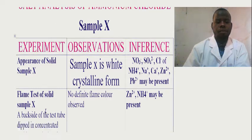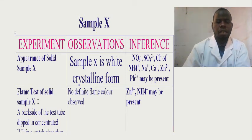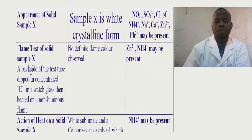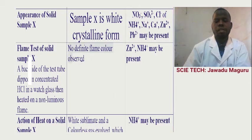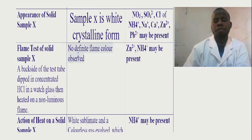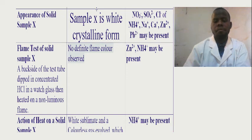Another step is to test for flame test, and you have to record it in passive voice. The observation for flame test in ammonium chloride: no definite color on the flame observed. And the inference: zinc ion and ammonia may be present.